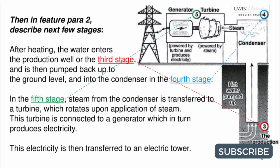In the fifth stage, steam from the condenser is transferred to a turbine, which rotates upon application of steam. This turbine is connected to a generator, which in turn produces electricity. This electricity is transferred to an electric tower.